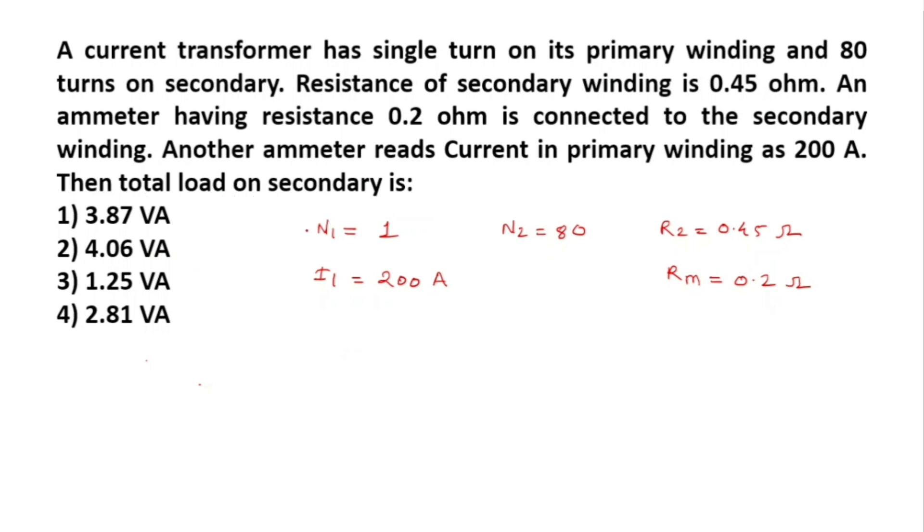So, for total load on secondary, I2 equals I2 square into R2. So I2 equals N1 times I1 upon N2, which equals 1 into 200 divided by 80. So I2 equals 5 by 2.